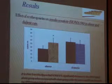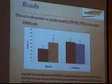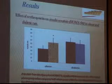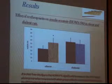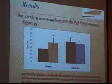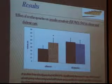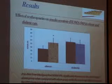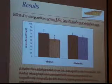Regarding insulin sensitivity, it is clear from this figure that insulin sensitivity significantly increased in the erythropoietin-treated obese group when compared with the obese group, while there was a significant change in the erythropoietin-treated diabetic group when compared with the diabetic group.